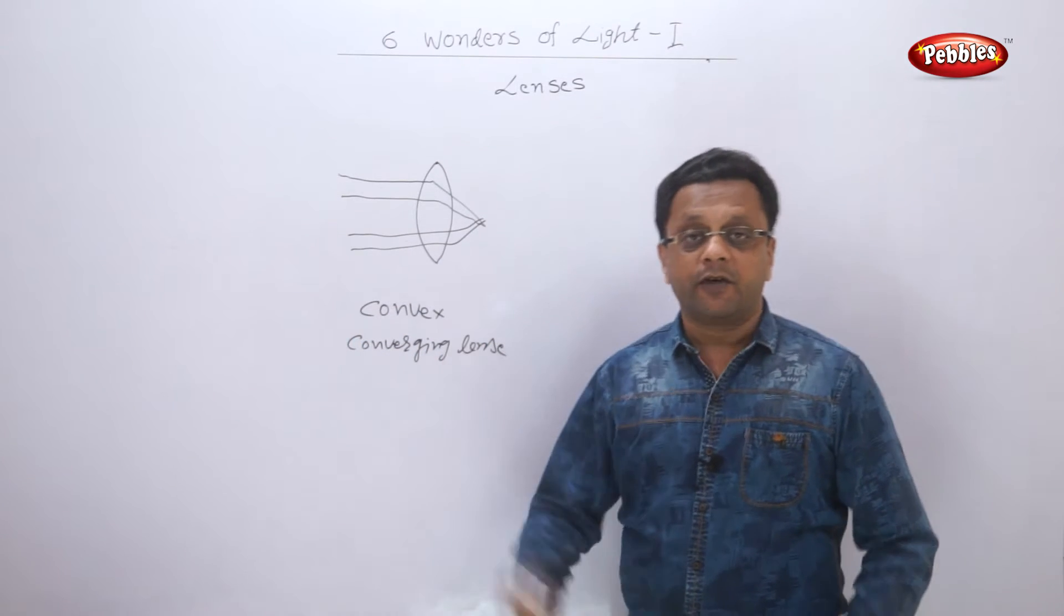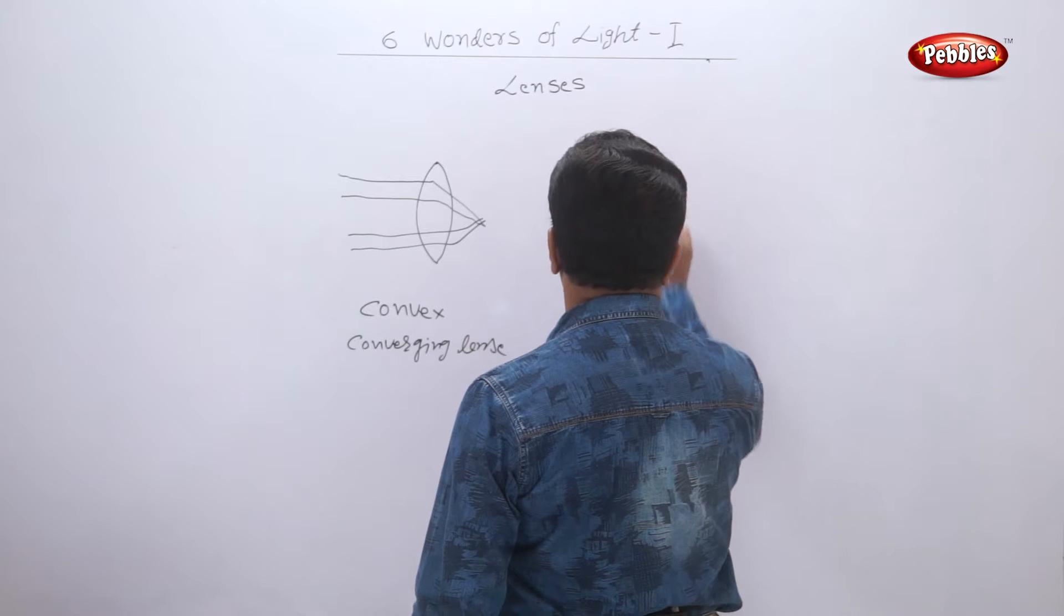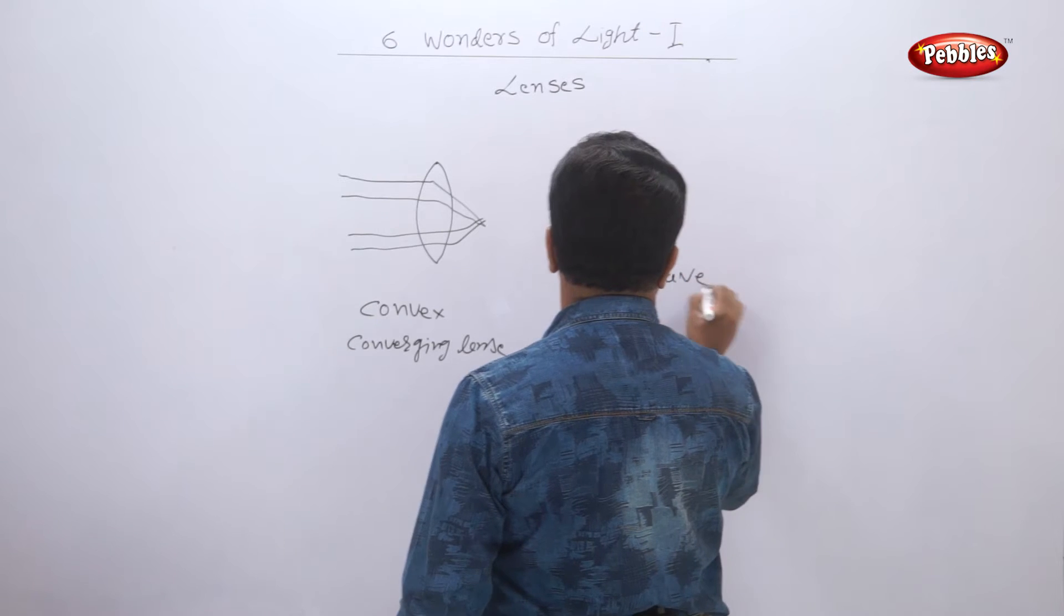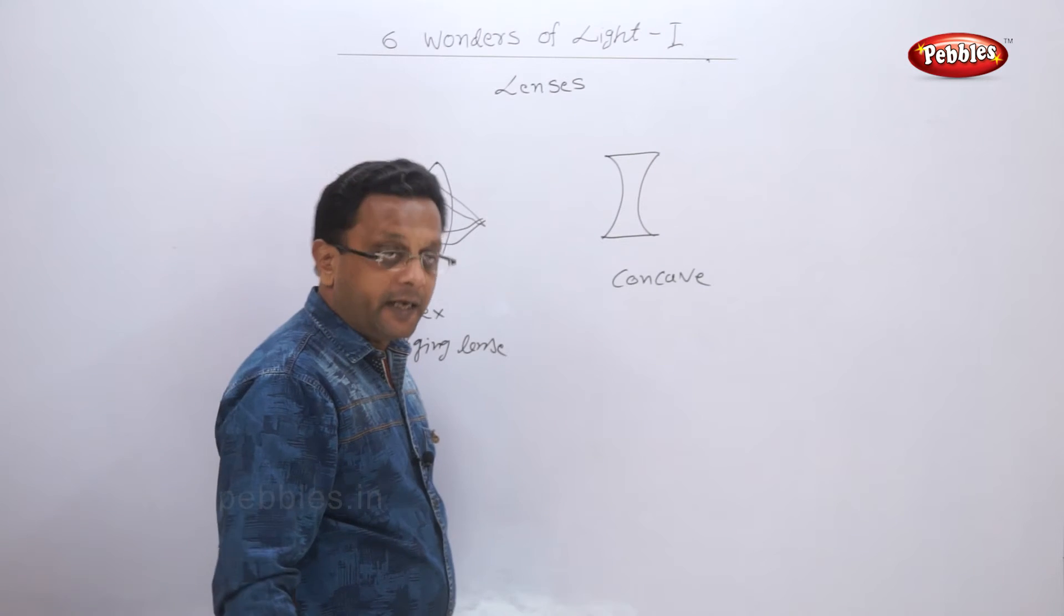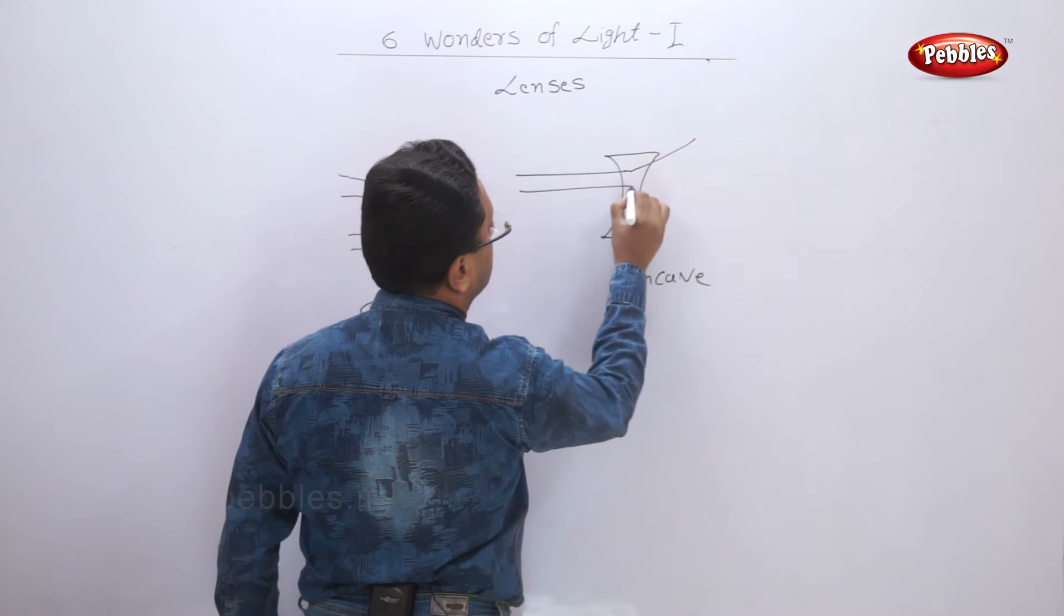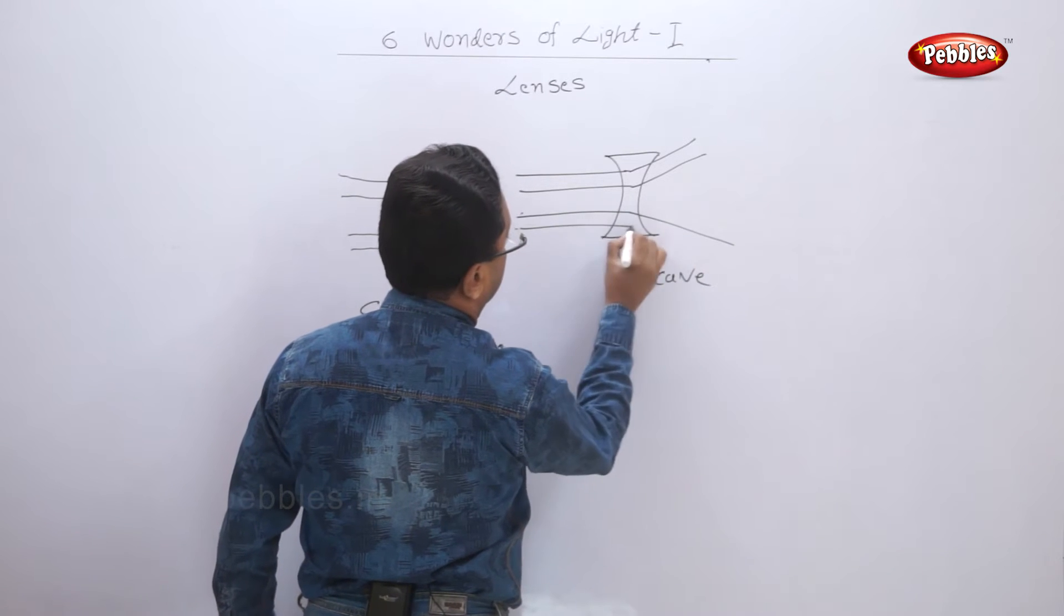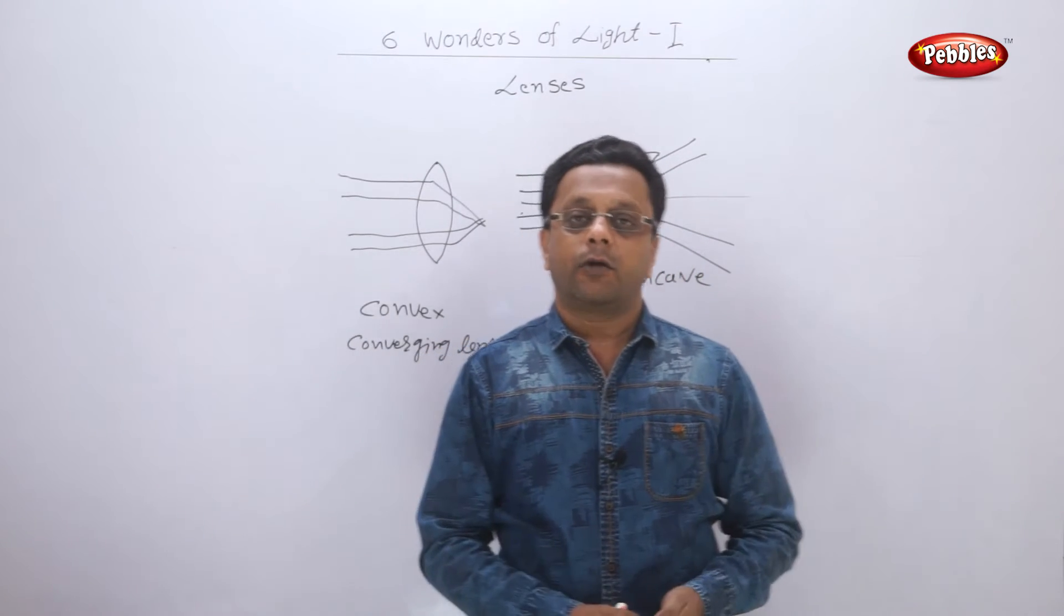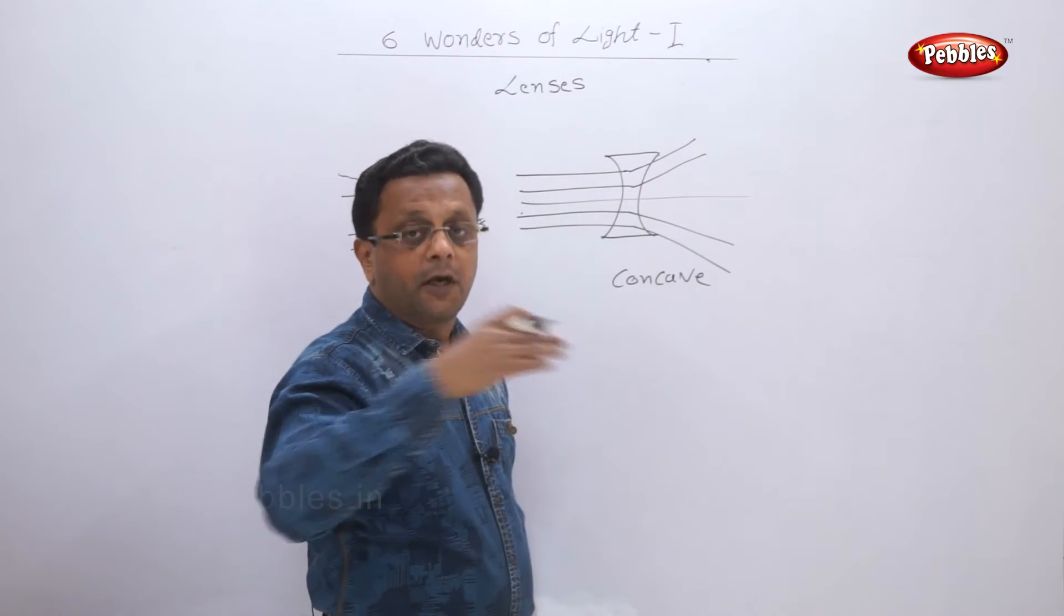Now there is one more type of lens which is concave lens. Concave lens is something like this, which is narrow at the center and bulge at the end. The peculiar thing of this lens is it diverges the rays. Whenever the light rays are incident on this lens, the light rays pass through the lens and it diverges. So this is also called as diverging lens.